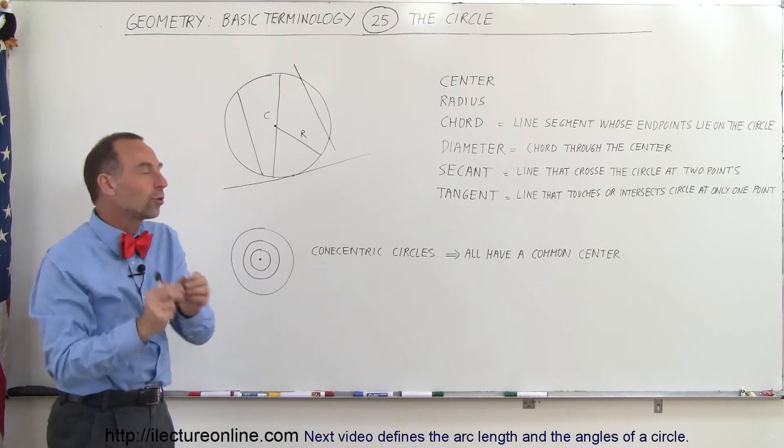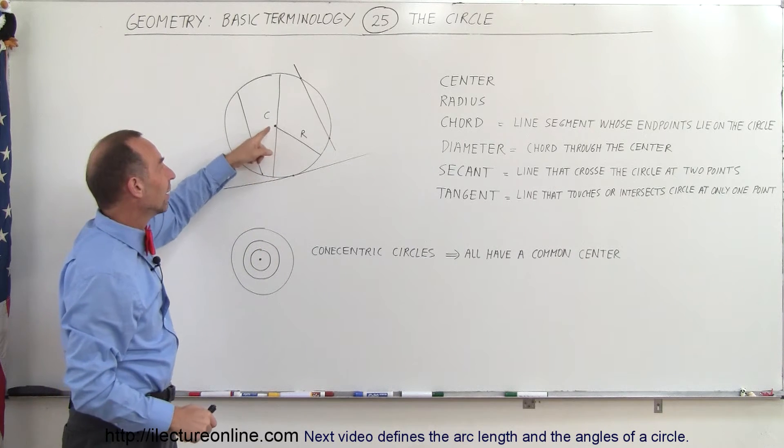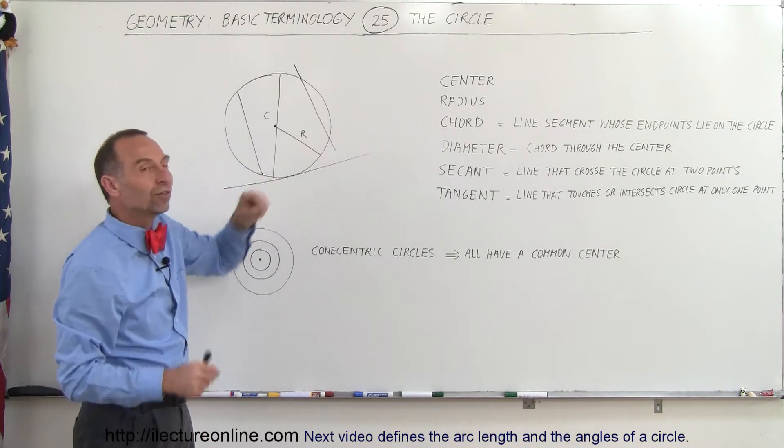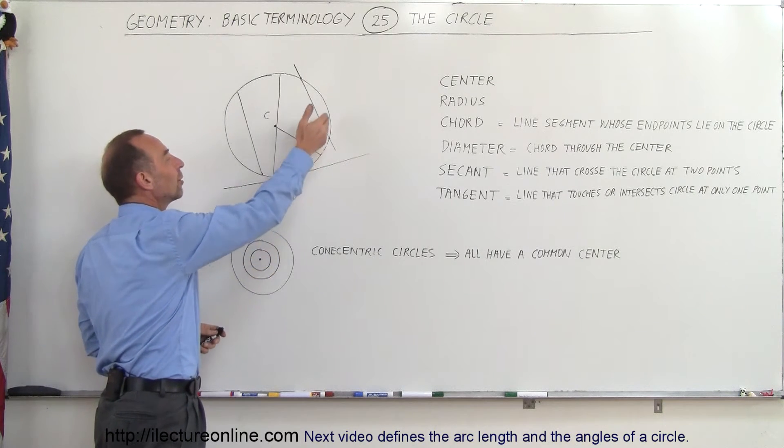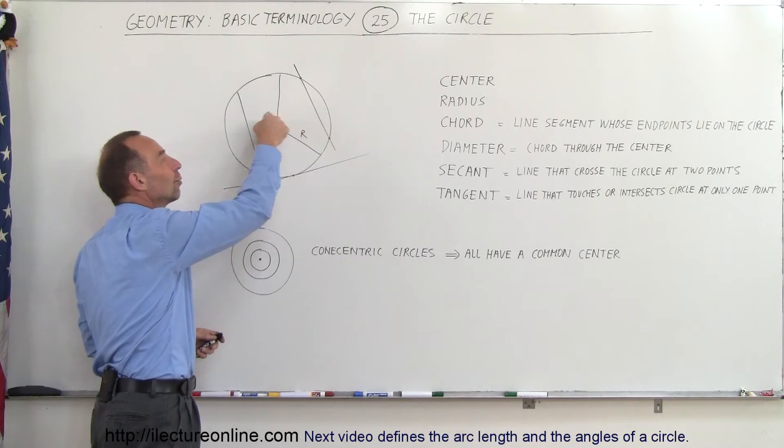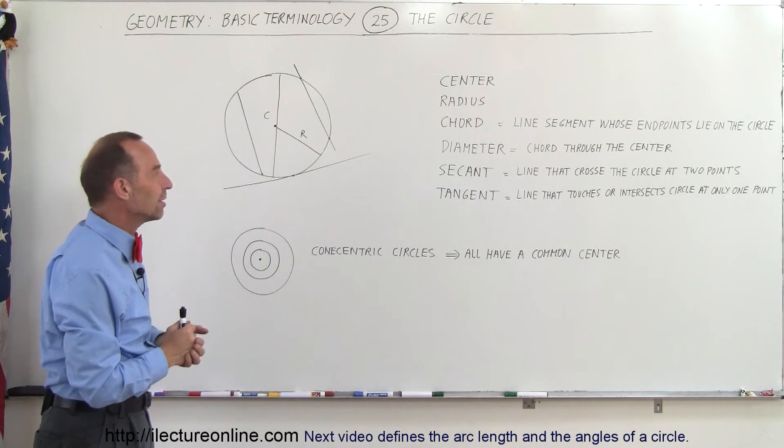A circle is defined by a center point called the center, and a set of points that form a curved line around that center, where every point on that line is the exact same distance away from that point, and that distance is called the radius.